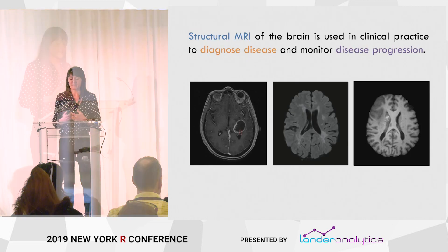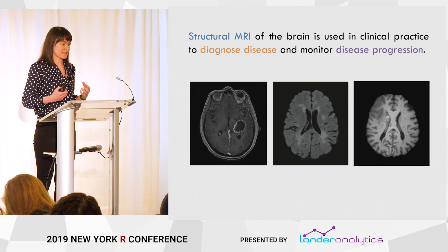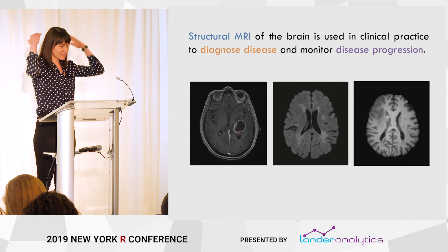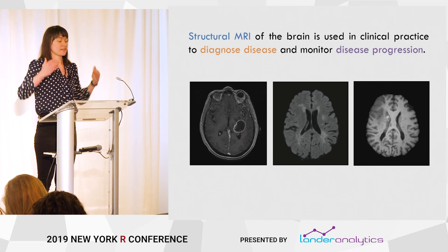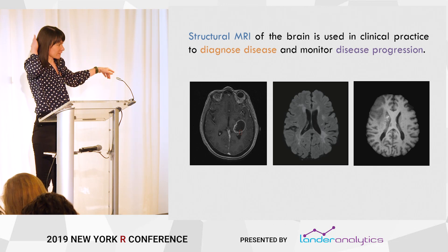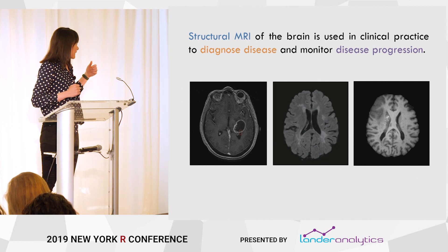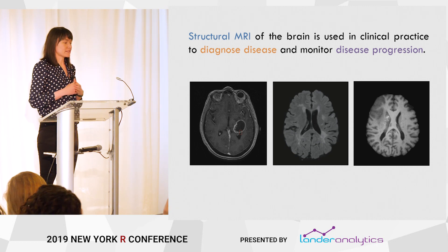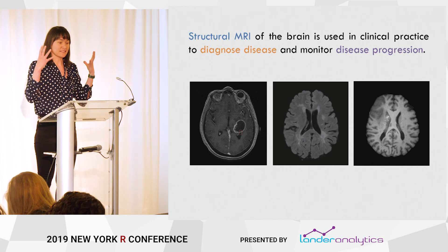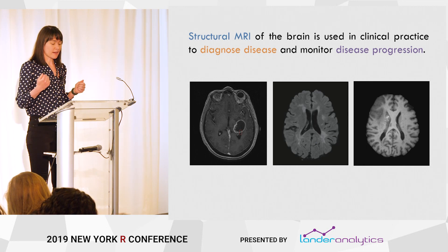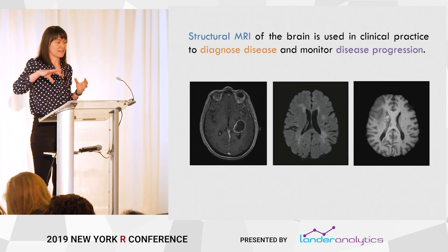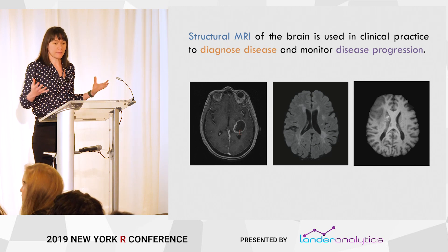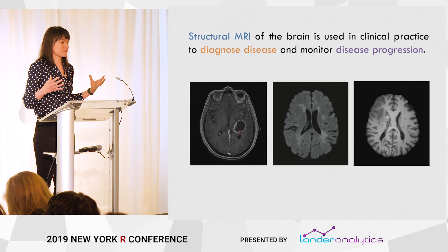Structural MRI of the brain is used in clinical practice to diagnose disease and monitor disease progression. I have three examples of structural MRI here — these are axial slices of the brain. The front of the brain is the top of the image, the back is the bottom. On the far left, a patient with brain cancer showing a tumor. In the center, a patient with multiple sclerosis who has hyper-intense lesions. On the far right, a person who suffered a stroke. These structural images are high-resolution images of the brain used clinically to follow patients and diagnose disease.